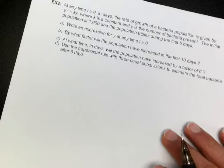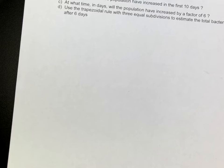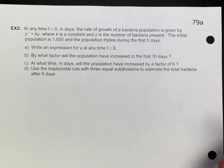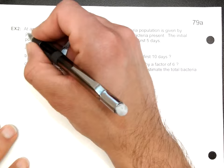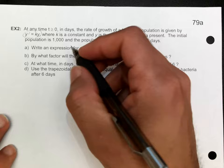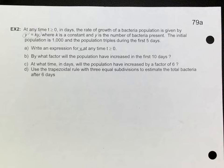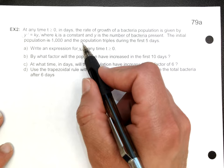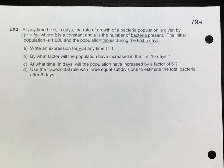Moving on to example two. We're given the rate of growth of bacteria: dY/dt = KY, where K is a constant, Y is the number of bacteria, the initial population is 1,000, and the population triples during the first five days. We'll use that information to find an expression for Y giving the population at any time.